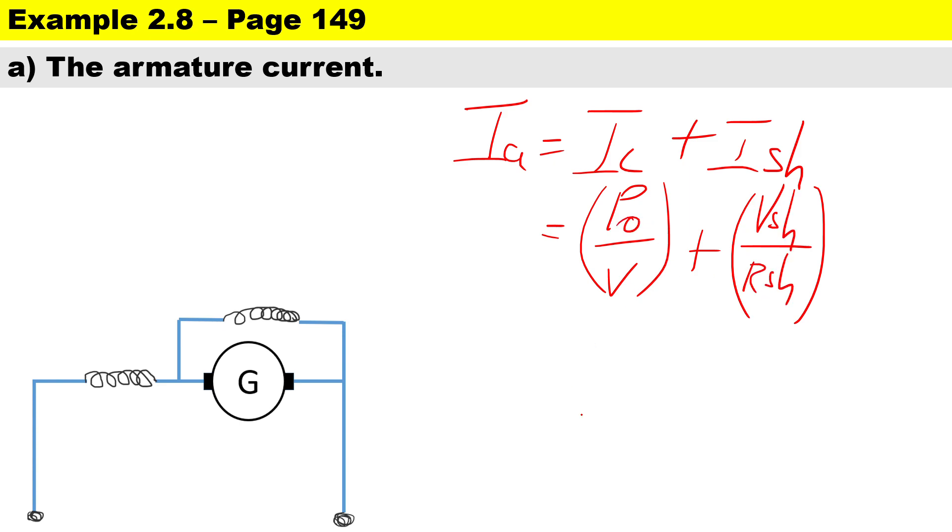Basically we need to calculate the shunt voltage. To calculate the shunt voltage, that's going to be the total voltage minus the volt drop across the series winding. So here is your volt drop across the series winding.